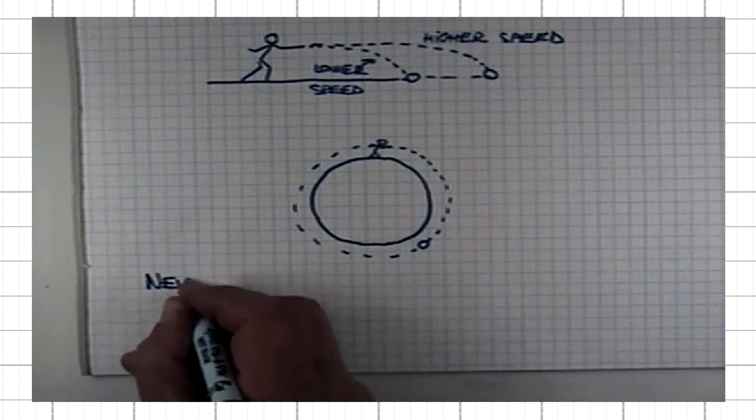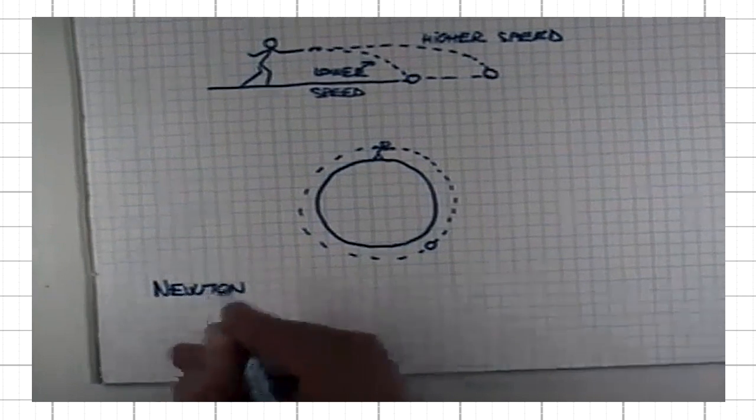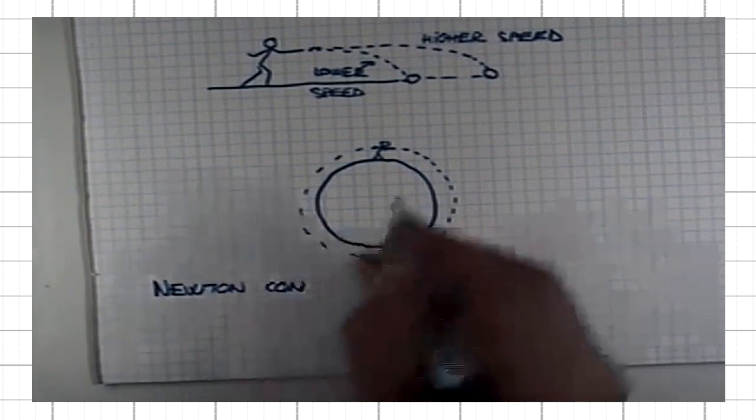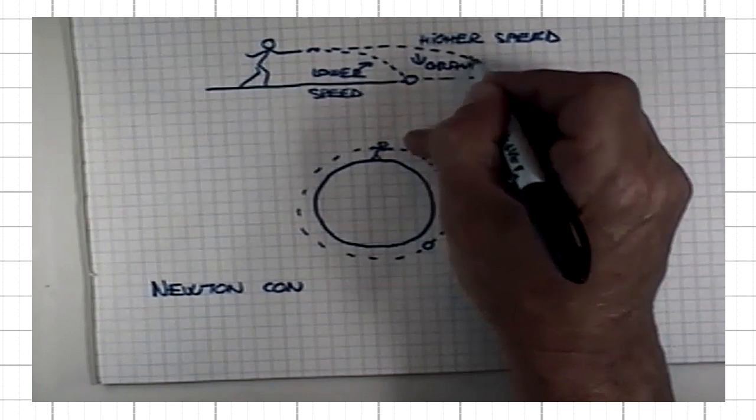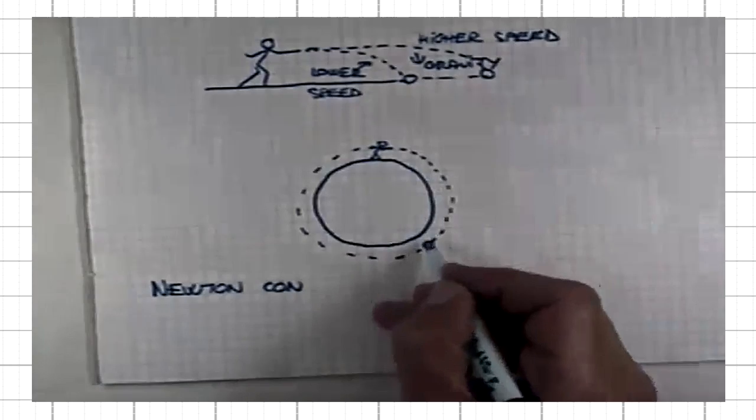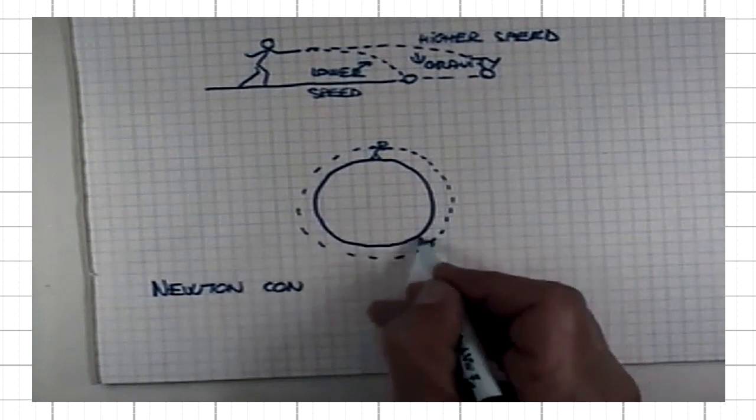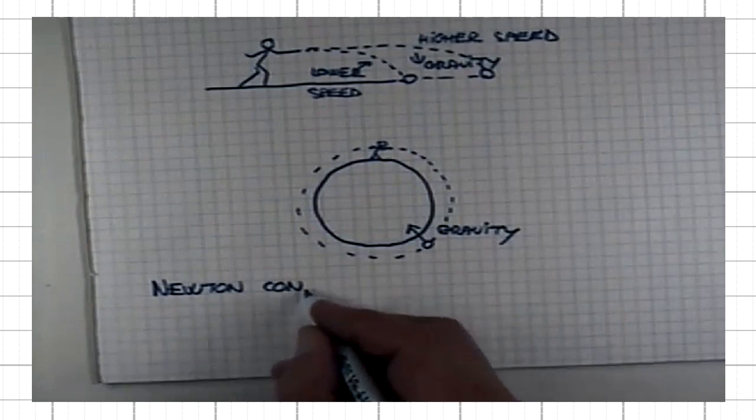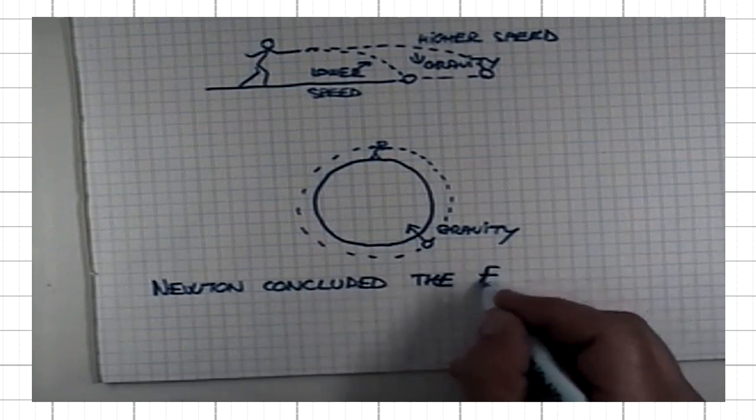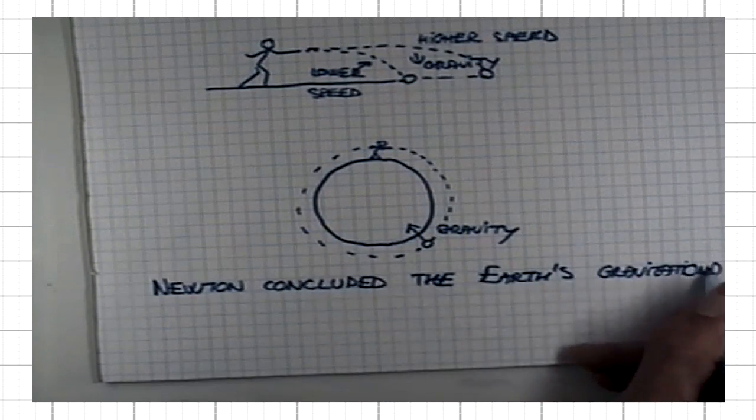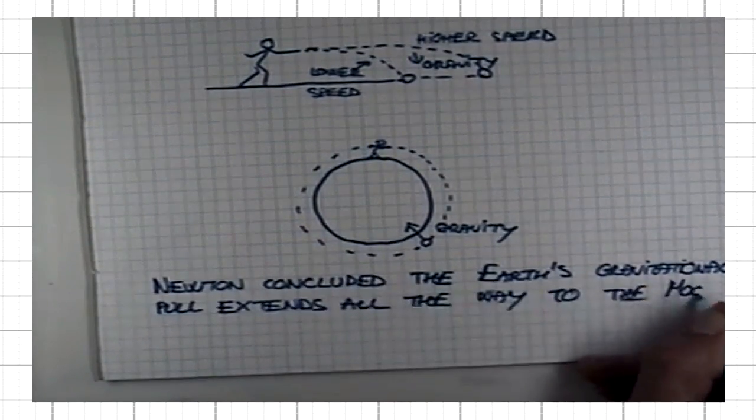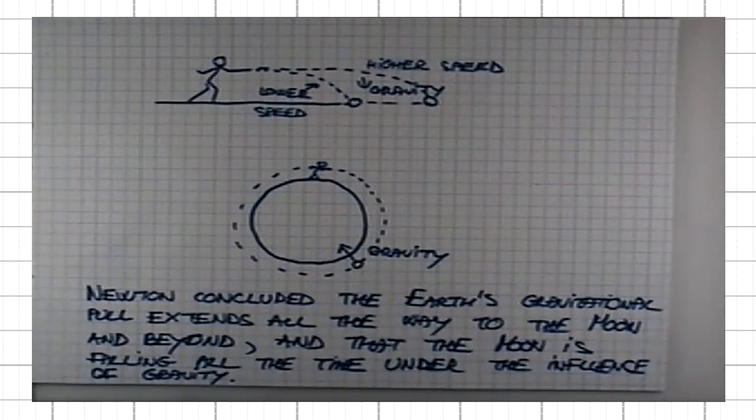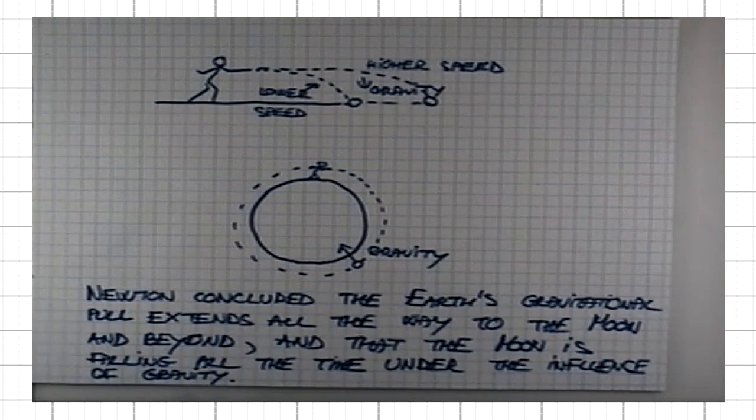Newton concluded that the ball falls under the influence of gravity. Here it does the same thing. It falls down under the influence of gravity. Newton concluded that the Earth's gravitational pull extends all the way to the Moon and beyond, and that the Moon is falling all the time under the influence of gravity.